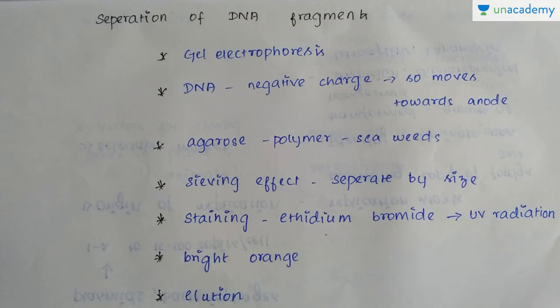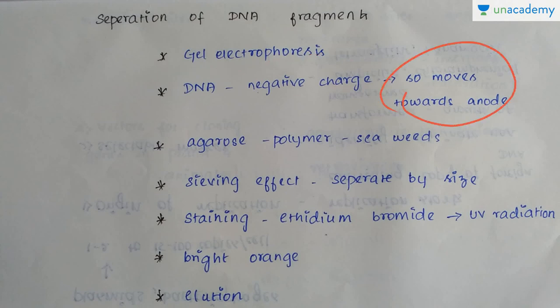Now, the separation of DNA fragments. After treatment with the restriction endonuclease, all these DNA fragments have to get separated. For this purpose, we employ gel electrophoresis under an electric field. Since DNA is a negatively charged molecule, it will move toward the positive electrode or anode. Agarose is a polymer employed here, which is actually extracted from seaweed, and a sieving effect is used mainly to separate DNA according to size.